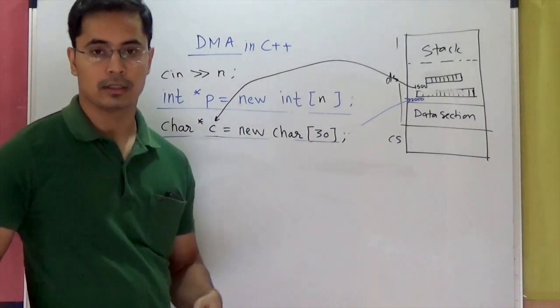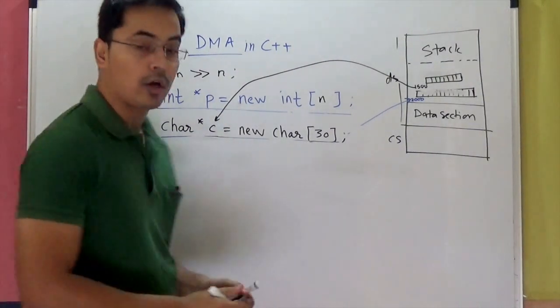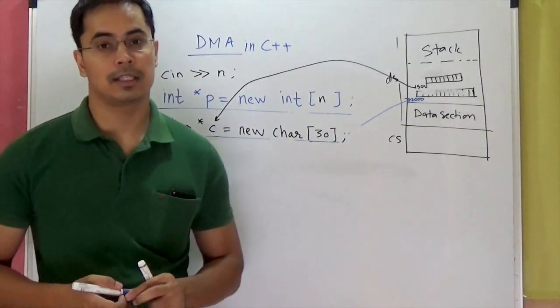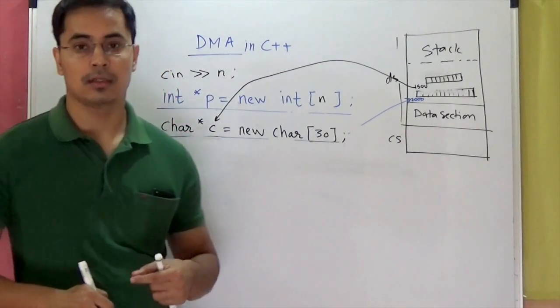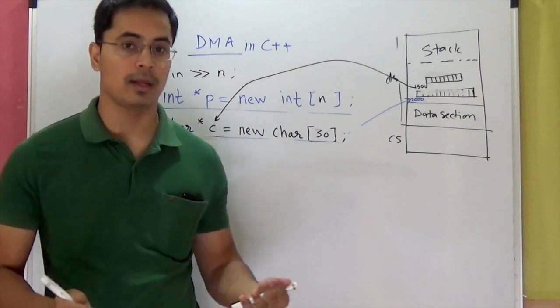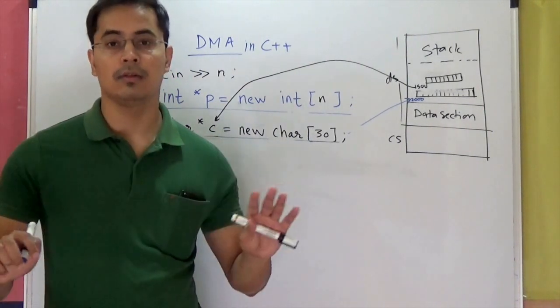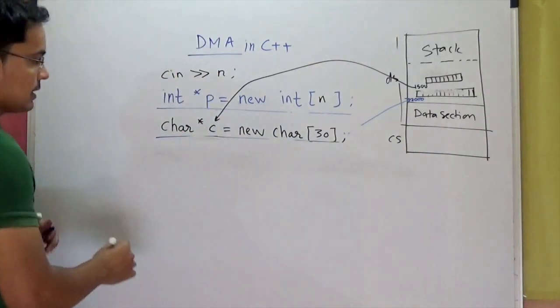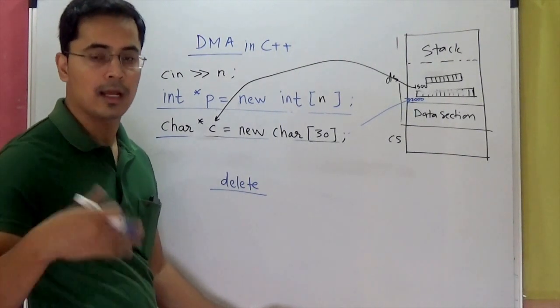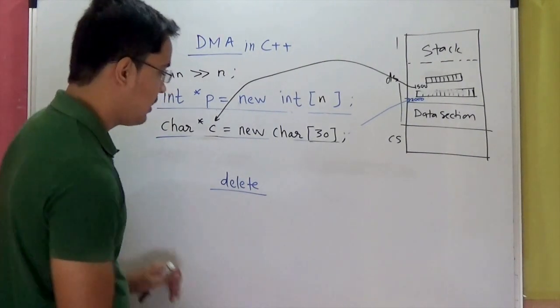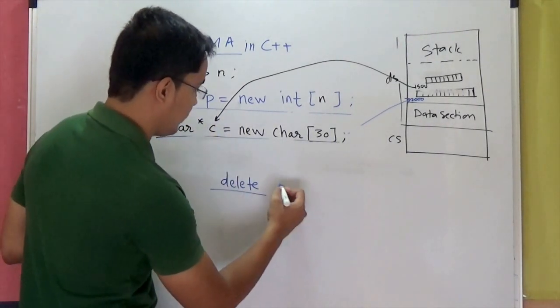Now, we have seen dynamic memory allocation. Now let us see how to de-allocate memory. So if you remember, in order to avoid issues such as dangling pointer or memory leakage, we must free or we must de-allocate the dynamically allocated memory once we are done with our usage. So here in C++, you have delete keyword to de-allocate or to free the dynamically allocated memory. It requires the pointer name, the base address. So in this case, it will be C.